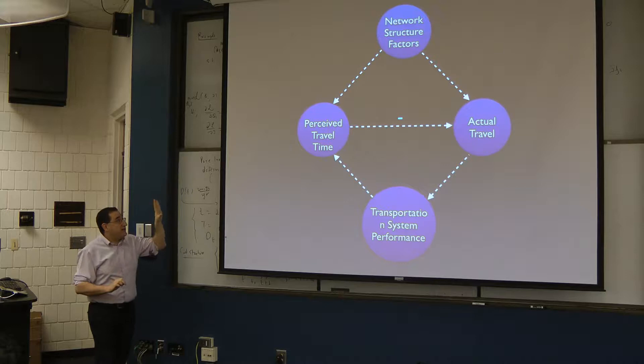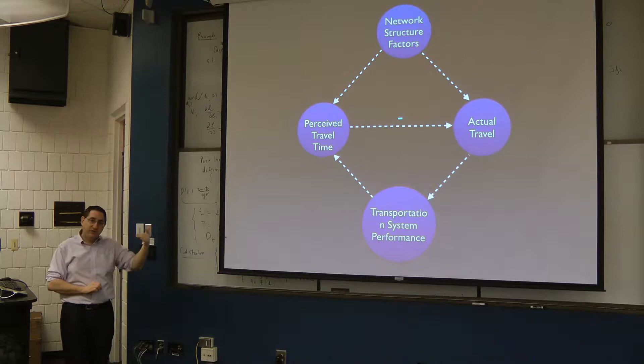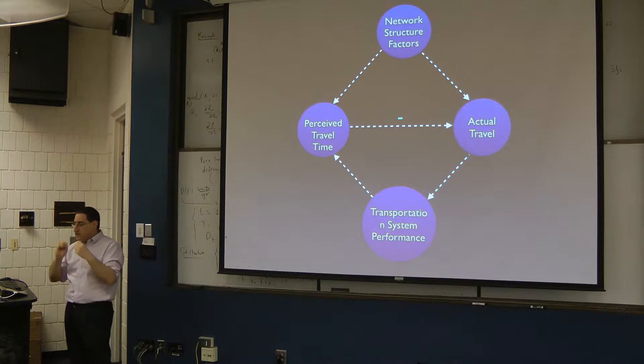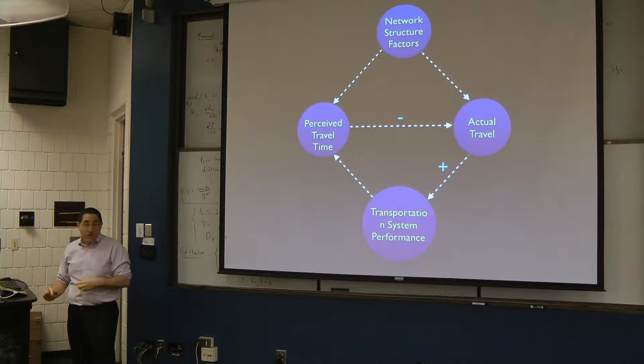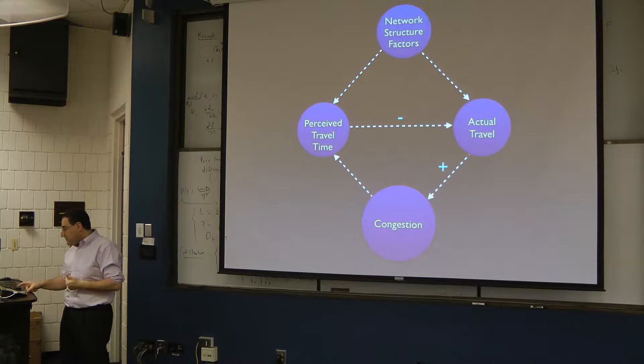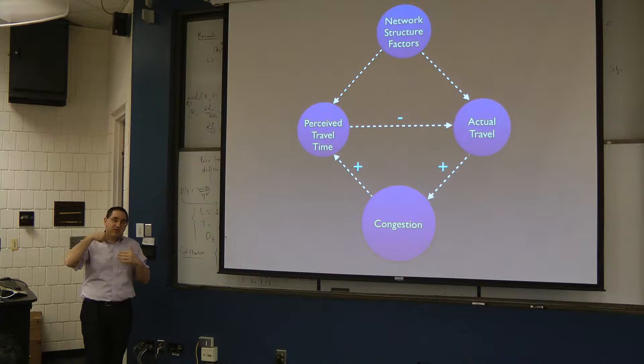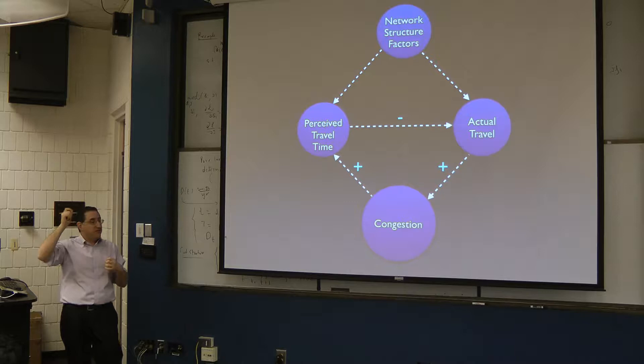Our hypothesis is that the higher you think the travel time is, the less travel you'll actually engage in, because you'll be deterred from traveling. If you think something is very far away, you're less likely to make a trip. The more actual travel there is, the more congestion there might be. More congestion raises your perceived travel time even beyond the actual increase, because congestion requires more mental attention. We'll be looking at this at a couple of levels.